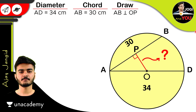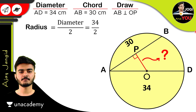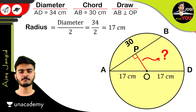First, let's find the radius of the circle, which is diameter divided by 2 — half of the diameter. The diameter is 34 cm, so the radius is 17 cm.